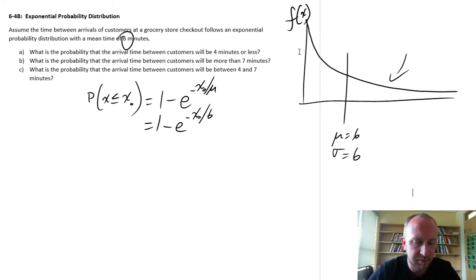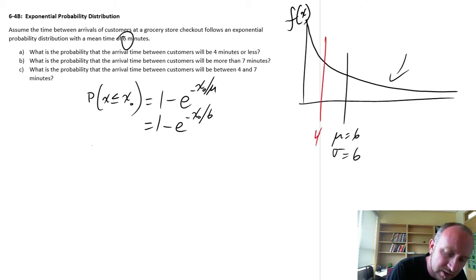Our first problem: what is the probability that the arrival time between customers is four minutes or less? Here is our value of interest. Somewhere around here is four. We're calculating that probability that the arrival between customers is less than or equal to four. I'm just going to plug that into my formula.